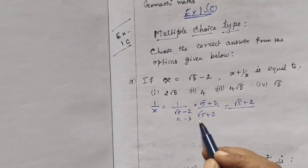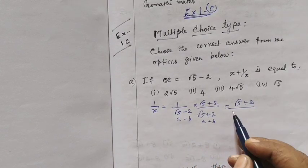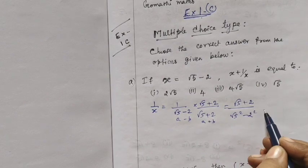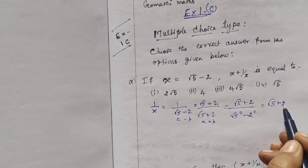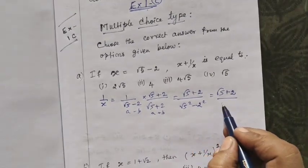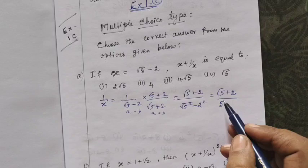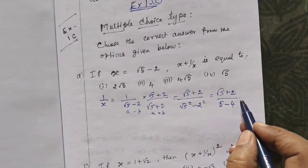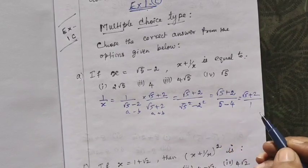Using the identity (a - b)(a + b) = a² - b², the denominator becomes root 5 squared minus 2 squared. Root 5 squared is 5, minus 4 equals 1. So 1 by x equals root 5 plus 2 by 1, which is root 5 plus 2.